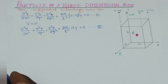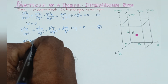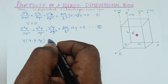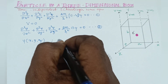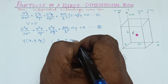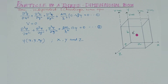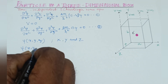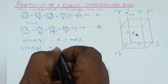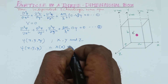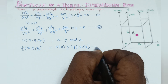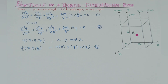It is assumed that the wave function ψ(x, y, z) is equal to the product of individual functions, that is X(x), Y(y), and Z(z), where x, y, and z are the variables. So we write ψ(x, y, z) = X(x) · Y(y) · Z(z). This is equation number 3. We substitute equation 3 into equation 2.